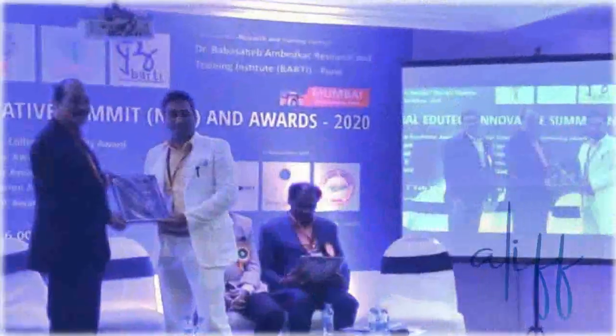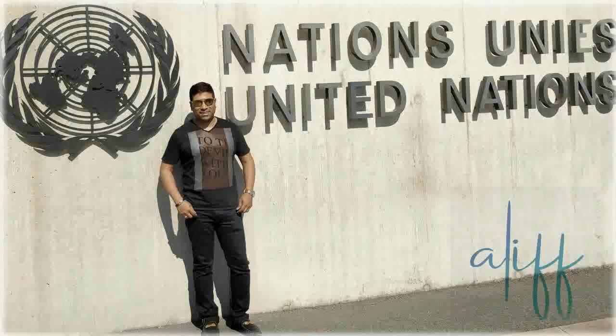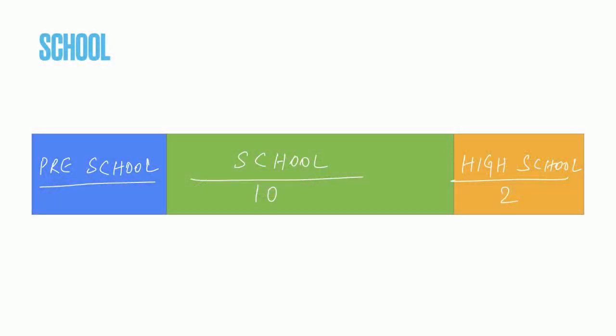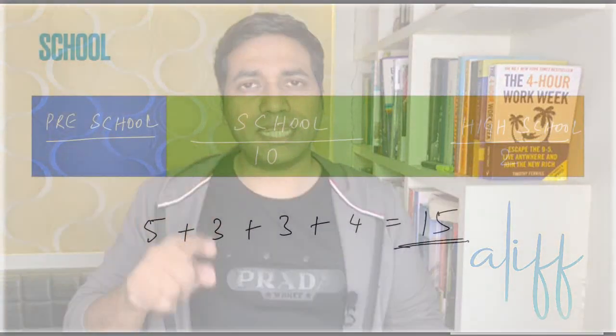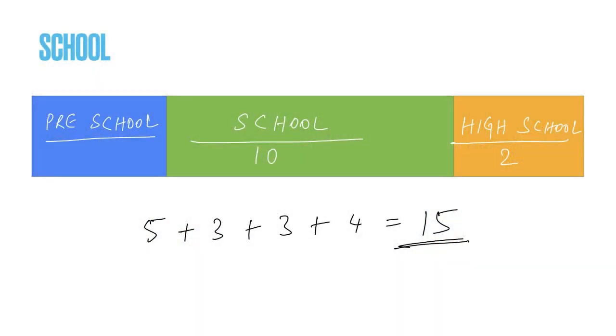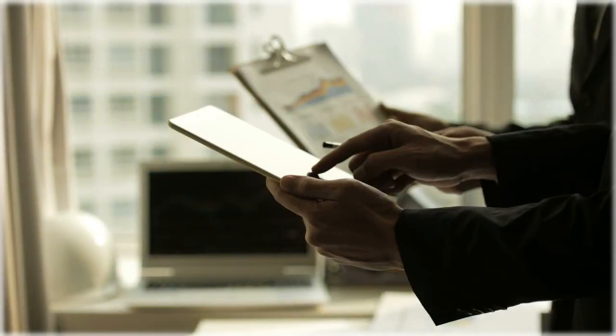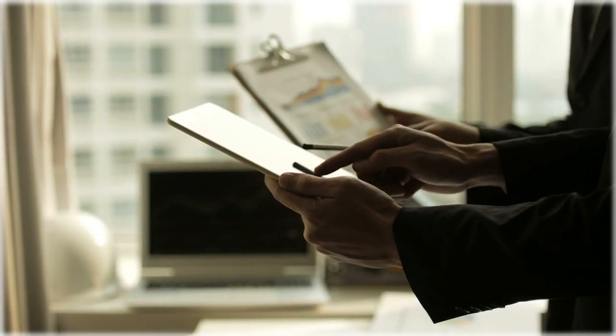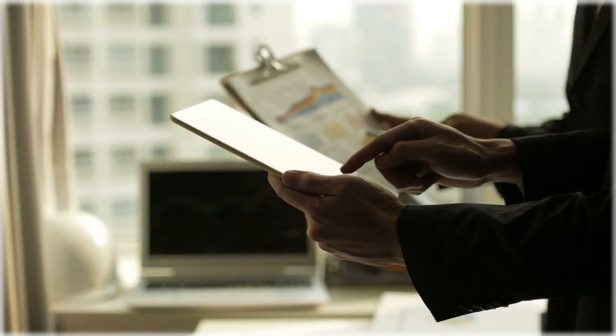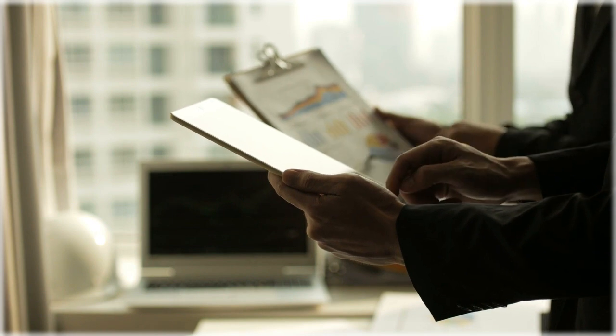Today we are going to discuss a very informative topic. Our current system is 10 plus 2, which we all know. Now the government has introduced 5 plus 3 plus 3 plus 4, which is equivalent to 15 years. The confusion is: if it is 10 plus 2, then 3 years of degree, does that make 15 years?